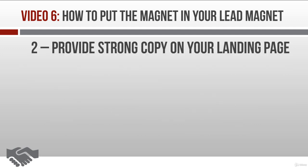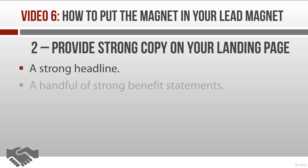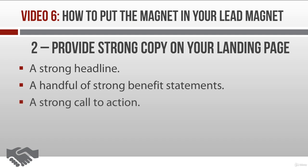The second tip for attracting prospects is to provide some strong copy on your landing page. You don't need to provide a lot of copy. You just need to be sure that you grab your prospects' attention and then give them a really good reason to join your mailing list. You can accomplish this with a strong headline that presents your lead magnet's biggest benefits, along with another few lines or bullet points that present a handful of the product's other strong benefits. Then be sure to end with a call to action where you specifically tell prospects what to do next to get their hands on the free lead magnet.